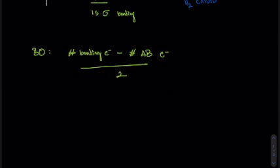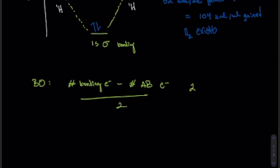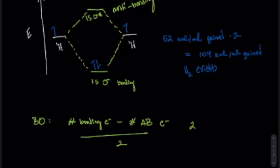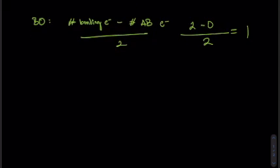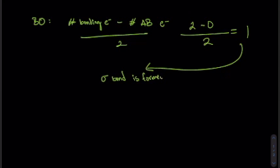And in this case, that is two because of the two electrons in the bonding orbital right here minus zero, because of zero electrons in the antibonding orbital divided by two, which is equal to one, which means that one sigma bond is formed. Therefore, diatomic hydrogen exists.